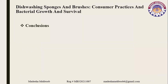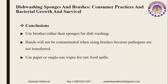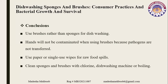These are the conclusions of my presentation: Use brushes rather than sponges for dishwashing because brushes are more hygienic. Brushes dry very fast compared to sponges and eliminate all types of bacteria. Hands will not be contaminated when using brushes because pathogens are not transferred. Use paper or single-use wipes for raw food spills in high-risk situations. Clean sponges and brushes with chlorine, dishwashing machine, or boiling, as these are the most effective cleaning methods.